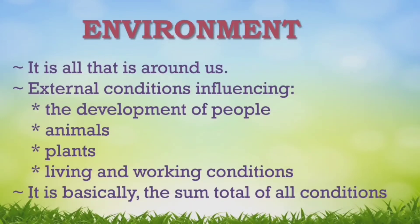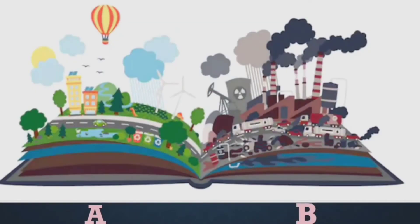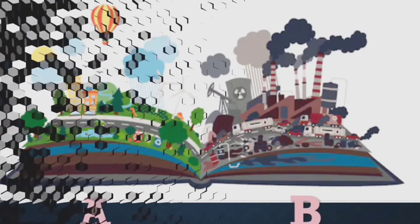It is basically the sum total of all conditions. Which environment do you like to live in? Would you rather choose A or would you rather choose B? Truthfully, the earth as a planet can live on its own even without people in it.